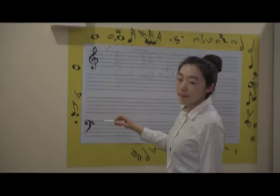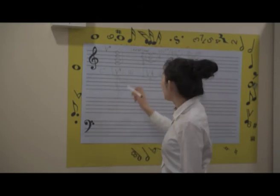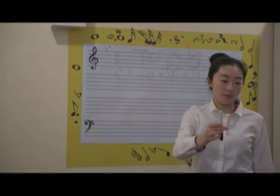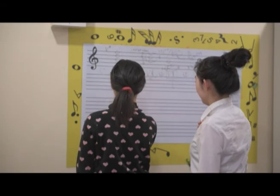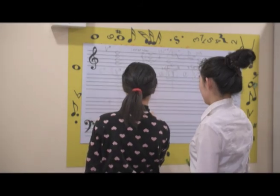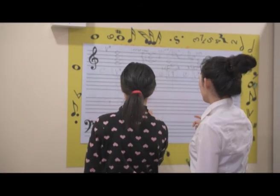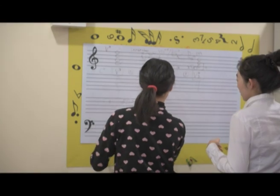Remember how to resolve all dominant sevenths? How to resolve a dominant seventh to I? In C major we have G, B, D, F — which note should rise? You can use the bass clef too. Go ahead and write it down.